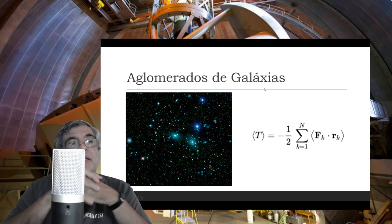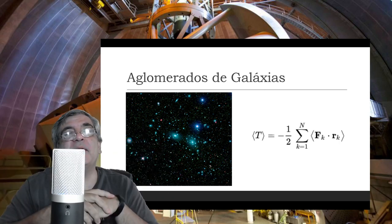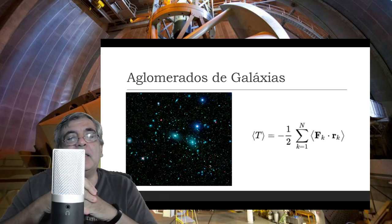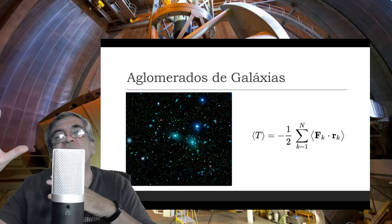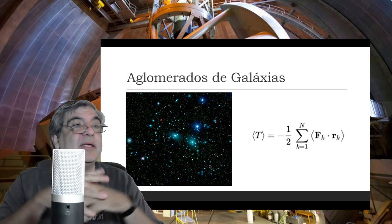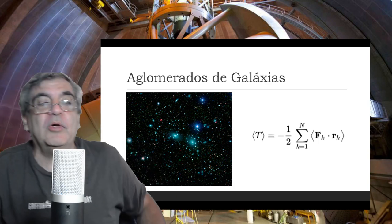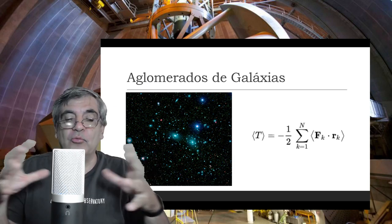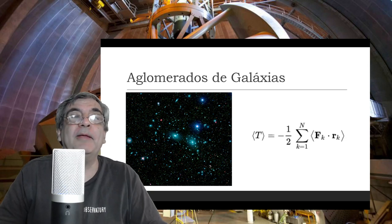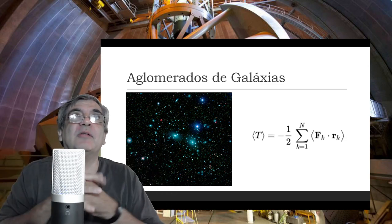O que acontece é o seguinte: essas primeiras tentativas que foram feitas, elas foram feitas com base em algumas contas específicas, hipóteses muito localizadas. Foi com um astrônomo chamado Zwicky, que por sinal ele é um dos autores de um catálogo de aglomerados de galáxias, como o Abell. Tem o catálogo Zwicky de aglomerados de galáxias.